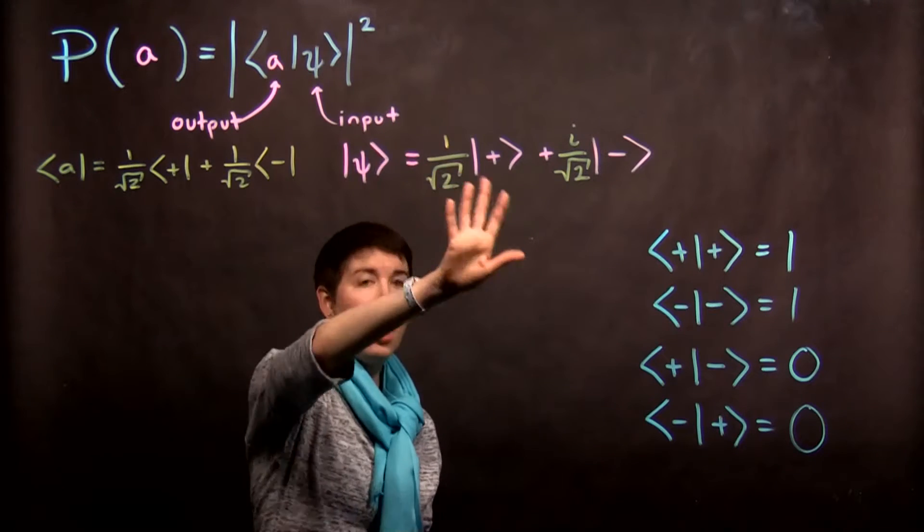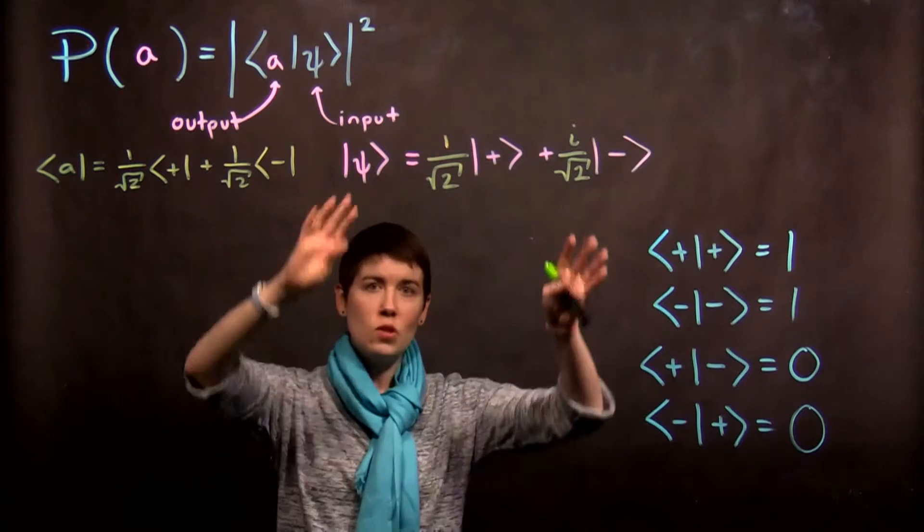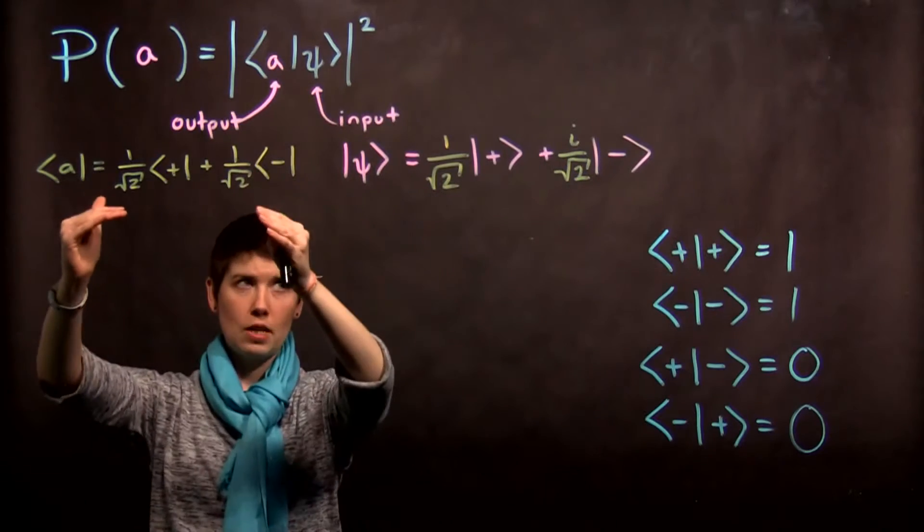And then we're going to have a concrete state for our ket, our initial state. So effectively, if this is our initial spin state, what is the probability of measuring this spin state?